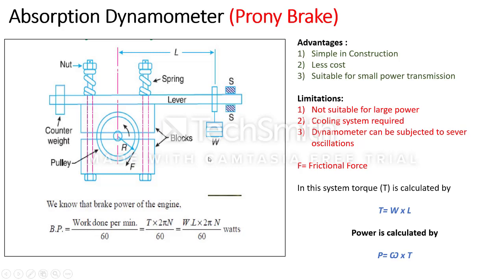This is the simple construction and working of the prony brake dynamometer. The speed is reduced — that's why the name is 'brake.' Once you get constant speed, measure the RPM, calculate the torque, and then calculate the brake power. Advantages: it is simple in construction, low cost, and most importantly suitable for small power transmission, so it can be used in laboratories. Limitations: not suitable for large power; a cooling system is required because friction generates heat, otherwise there will be huge damage; and the dynamometer can be subjected to severe oscillations due to unbalancing.